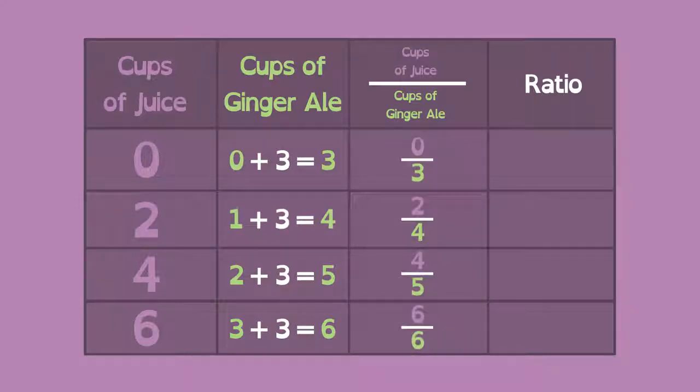the ratio of juice to ginger ale is no longer constant. The two quantities don't increase at the same rate. This is not direct proportionality.